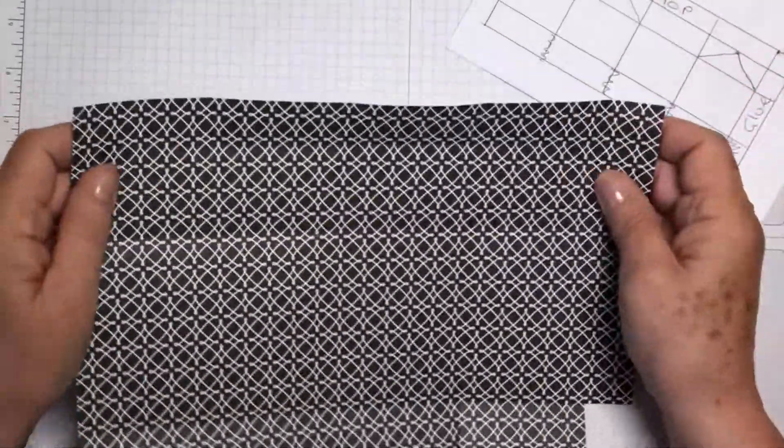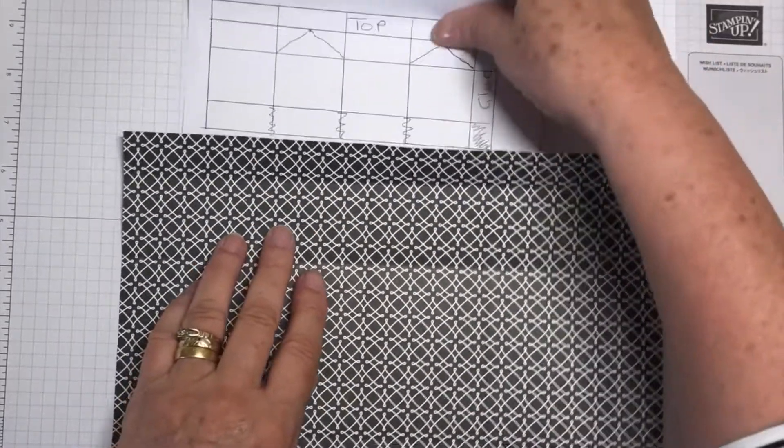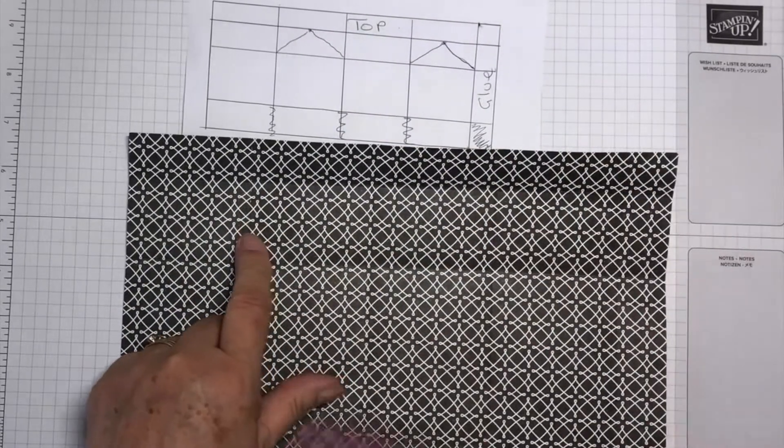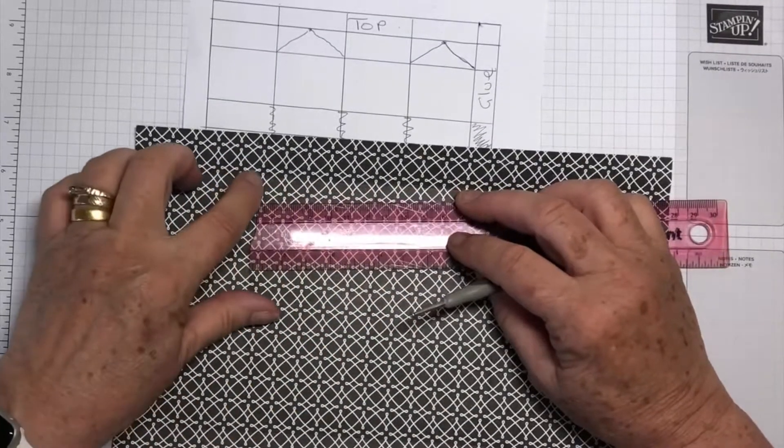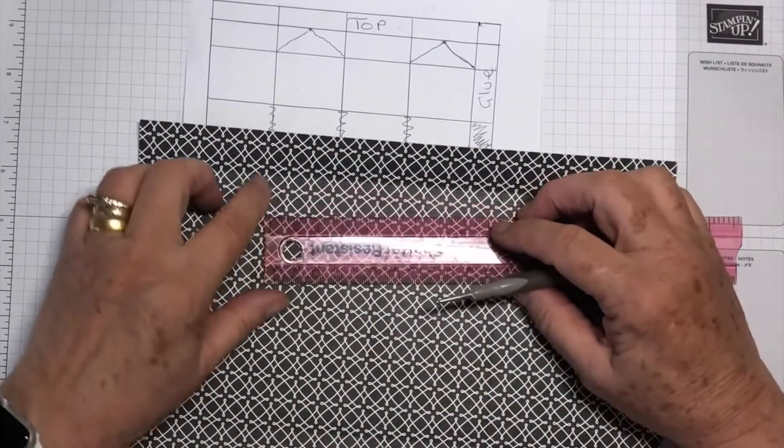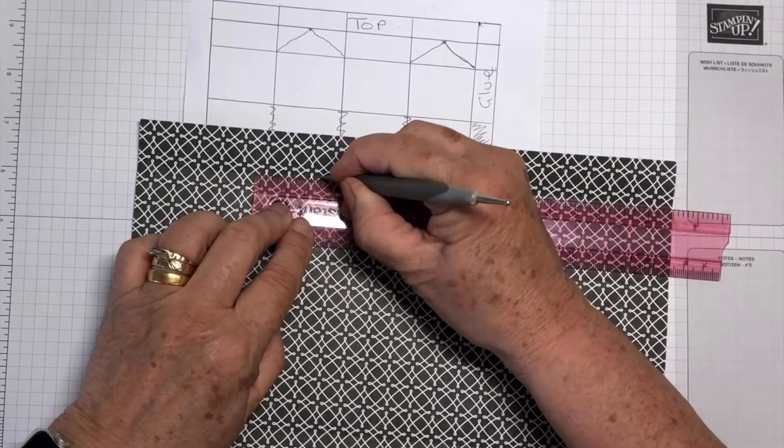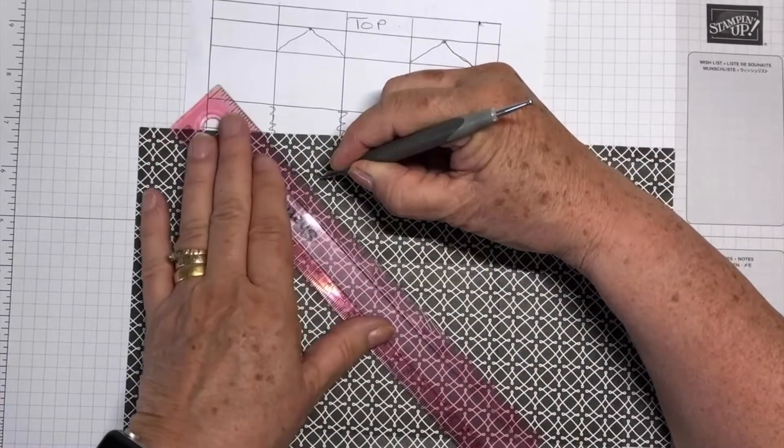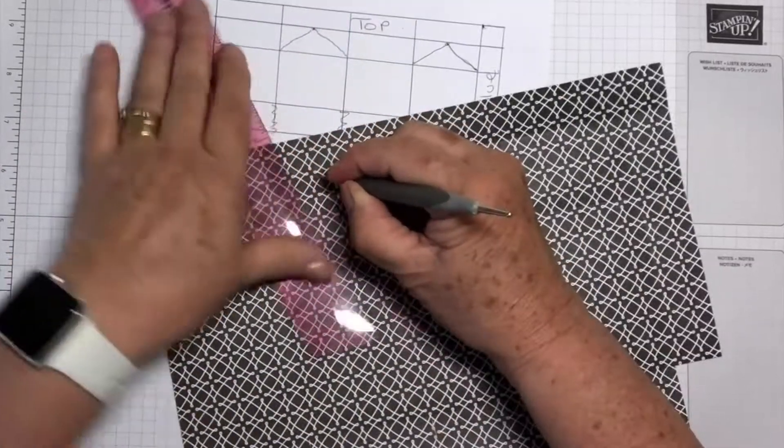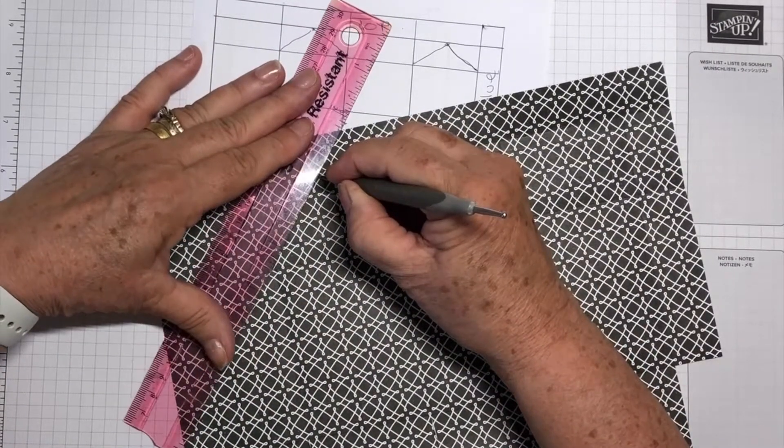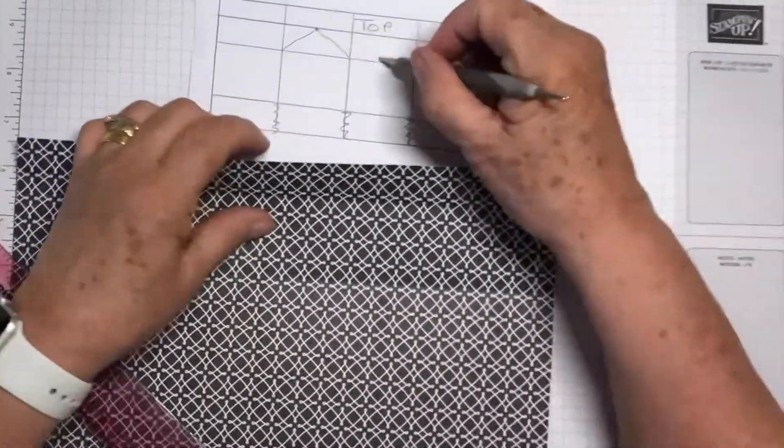We need this on the wrong side. This panel here, we're going to find the middle with the scoring tool, which I know is one and a quarter. Make a mark, and from that mark you need to go down to the first score line, and then down again.